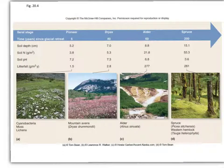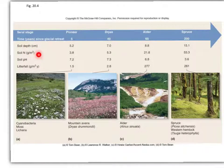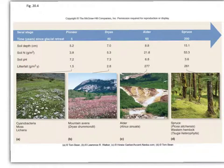This table shows two main things: the changing conditions of the soil — the depth of the soil, how much nitrogen is there, the pH of the soil, and the depth of the litter fall, which adds nutrients to the soil. You can see these values for different stages in the succession.